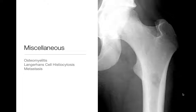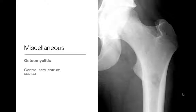Miscellaneous lesions include osteomyelitis, Langerhans cell histiocytosis, and metastasis. Metastases are pretty rare in children, but if they have a malignancy such as neuroblastoma or Wilms tumor, they can have metastasis to the bones. This is an example of osteomyelitis showing a geographic lytic lesion with a central bony sequestrum. Langerhans cell histiocytosis would look just like this as well, making it hard to tell apart radiographically — but this was an example of osteomyelitis with a bony sequestrum.